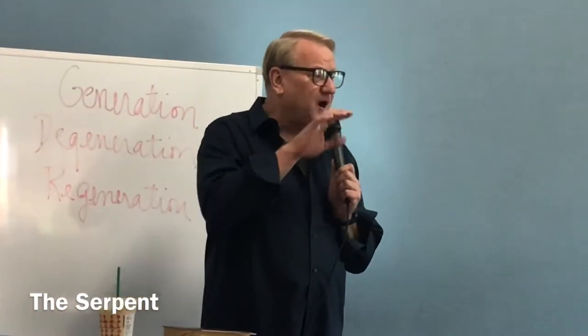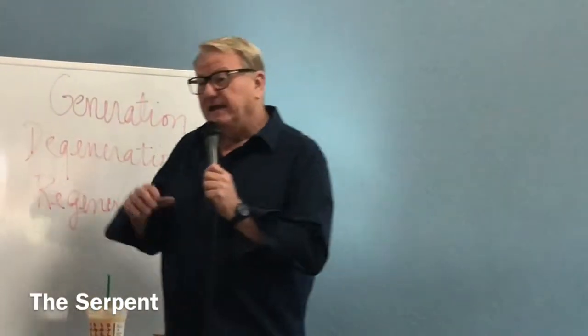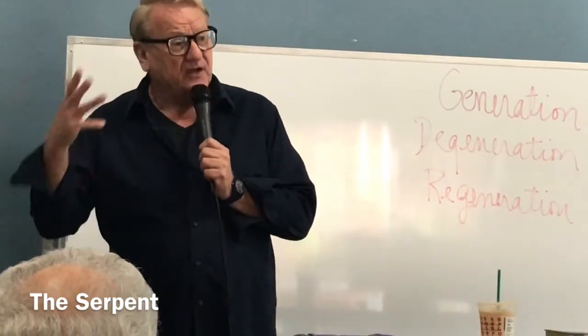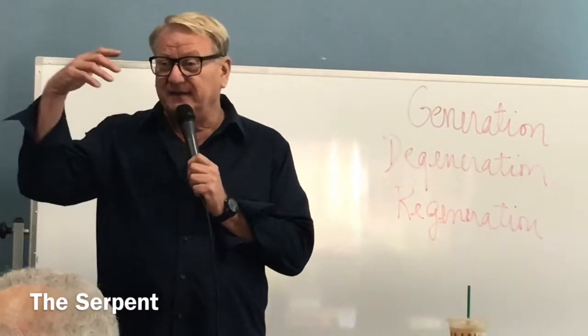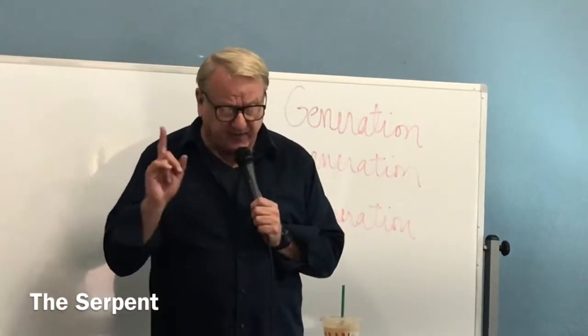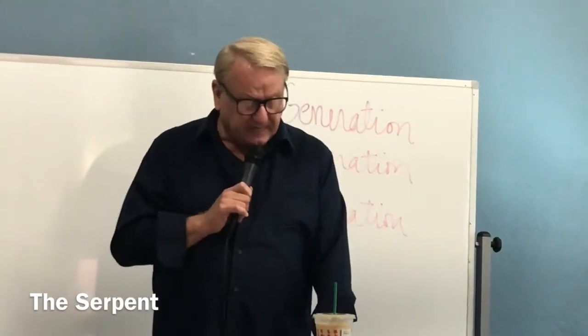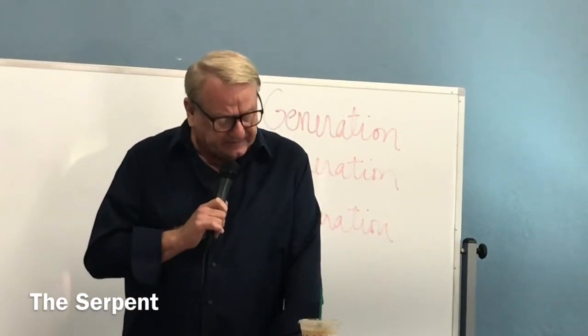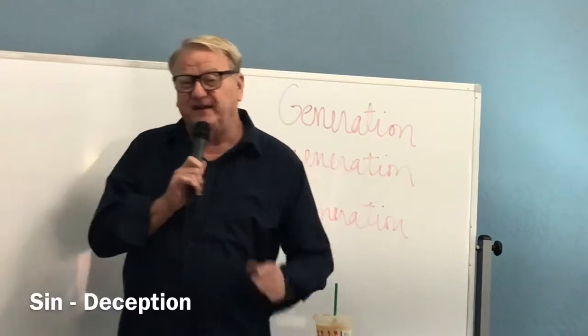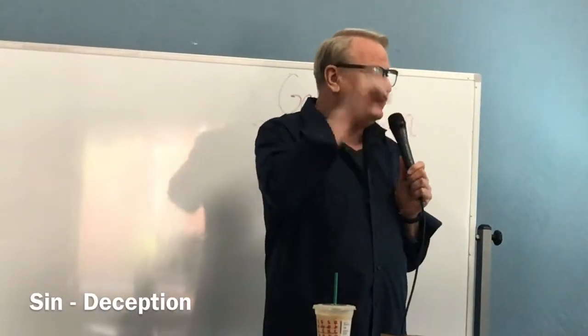The Canaanites believed in and idol-worshipped the serpent, because the serpent was used as part of their fertility rite — it was a false god. So right from the beginning, the author of the story takes a false god of the Canaanites so that that false god can be knocked down. The serpent was more crafty than any other animal that the Lord God had made. He said to the woman, 'Why did God say you shall not eat from any tree in the garden?' Why is that significant?